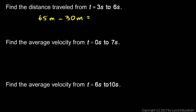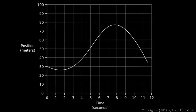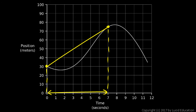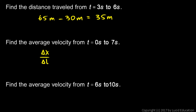Next, find the average velocity from 0 to 7 seconds. At 0 seconds we start here, and at 7 seconds we're at this point. We find the slope of the line segment from 0 to 7 seconds. The run is 7 seconds, and the rise goes from 30 to about 75, a rise of about 45 meters. So delta x over delta t is 45 meters over 7 seconds, which comes out to about 6.4 meters per second.